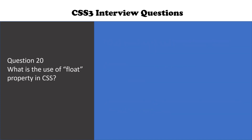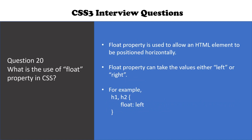The last question is: what is the use of the float property in CSS? The float property is used to allow an HTML element to be positioned horizontally. The float property can take the value either left or right. This is an example where we give heading h1 h2 the value float left.